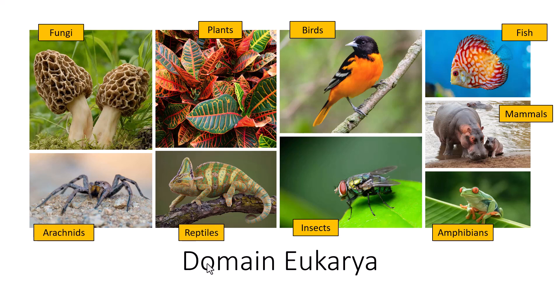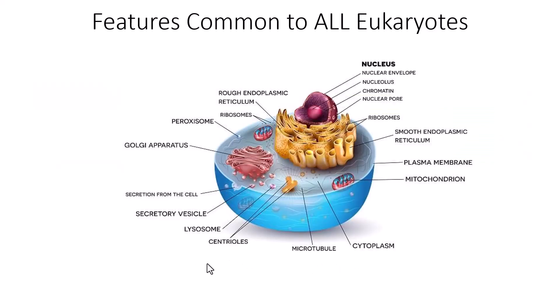All of these groups of organisms belong to domain Eukarya, which means they are multicellular organisms composed of eukaryotic cells. When we talk about differences between the eukaryotic cells that make up these organisms, we need to understand that all of them are composed of eukaryotic cells, so the basic architecture of the cell is the same, but there are some key differences.